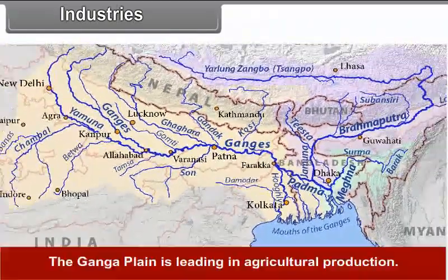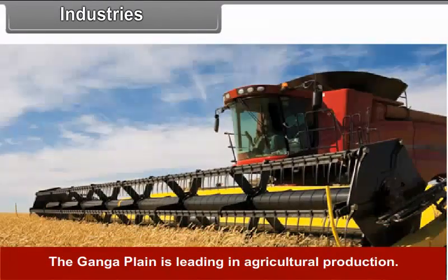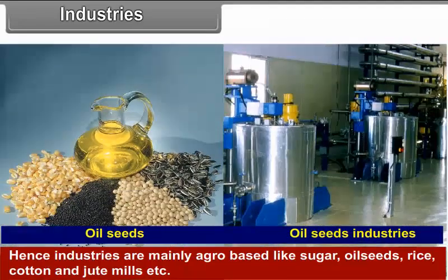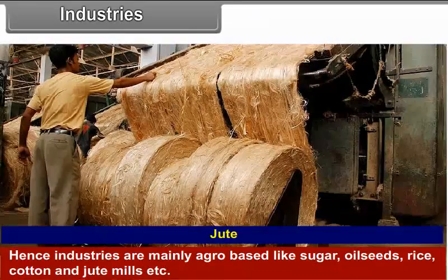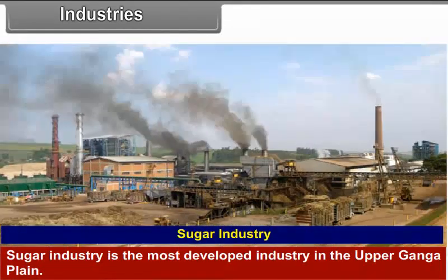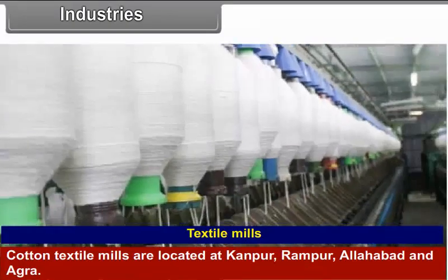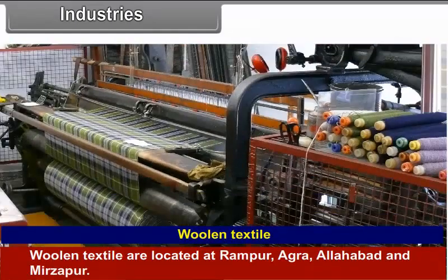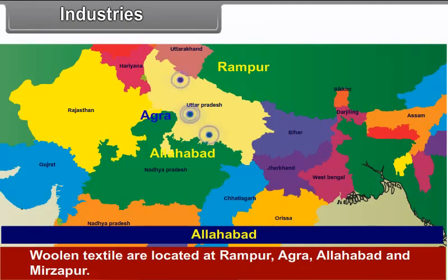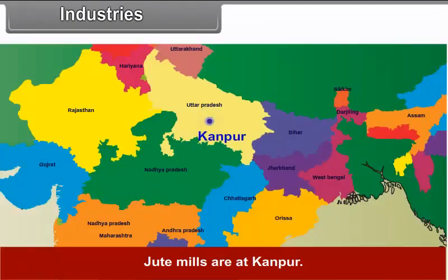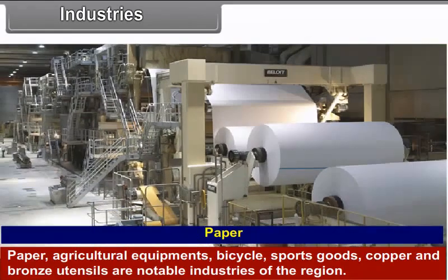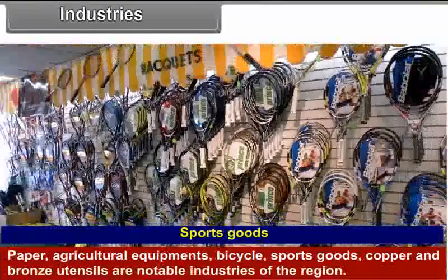Industries. The Ganga Plain is leading in agricultural production, hence industries here are mainly agro-based — sugar, oil seeds, rice, cotton and jute mills, etc. Sugar industry is the most developed in the Upper Ganga Plain. Cotton textile mills are located at Kanpur, Rampur, Allahabad and Agra. Woolen textiles are located at Kanpur, Agra, Allahabad and Mirzapur. Jute mills are at Kanpur. Leather industry has flourished at Kanpur and Agra. Paper, agricultural equipment, bicycle, sports goods, copper and bronze utensils are also notable industries of the region.